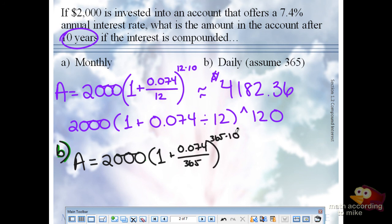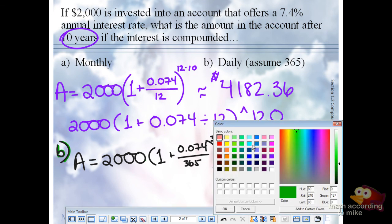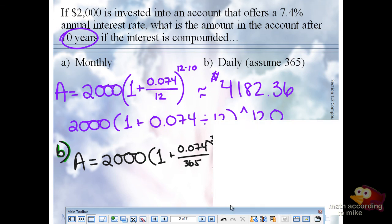So that exponent's going to be 3,650. If you would, put that in your calculator. I have to look at my notes. $4,191.56? Yes.